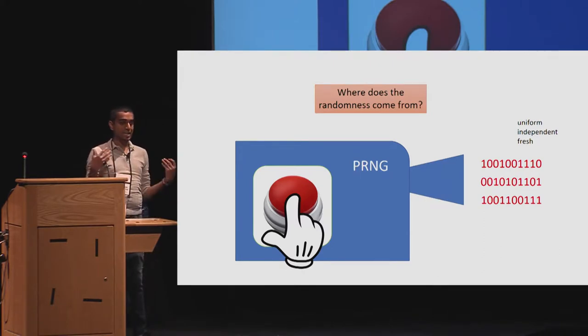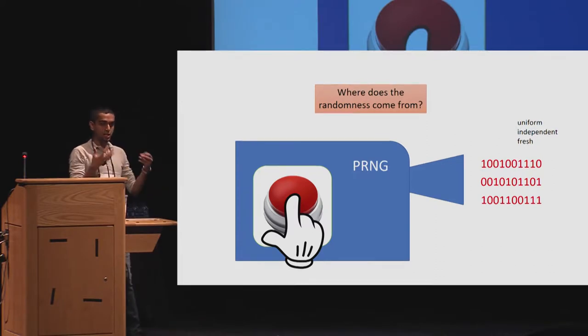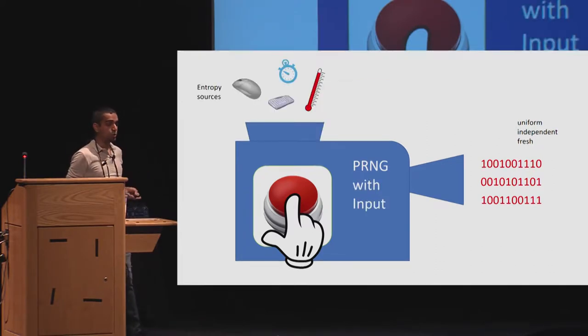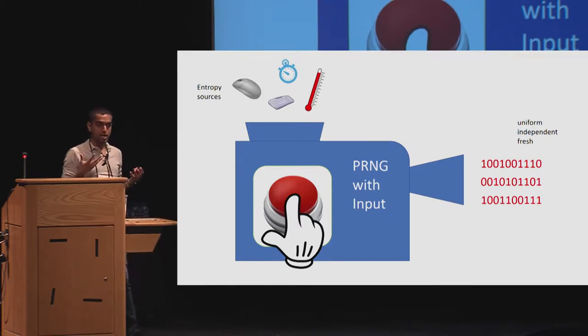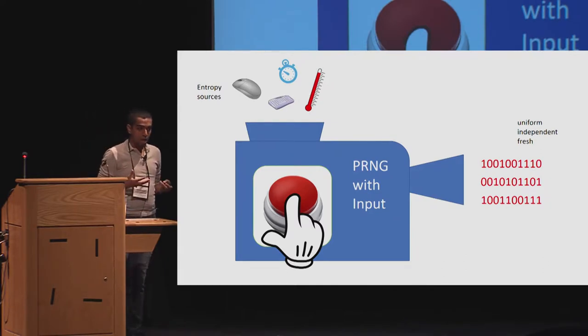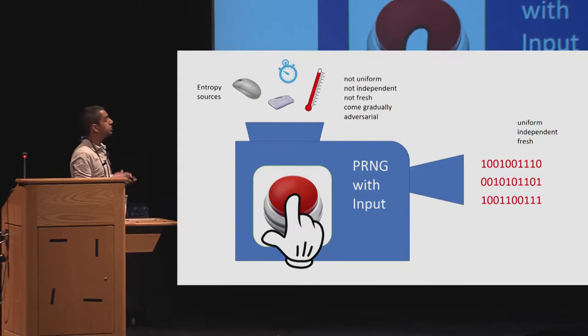When we look inside this big red button, what we see is that this PRNG is actually a PRNG with input. What are these inputs? These are entropy sources. Typically these are interrupts, but they can also be system measures such as temperature and timing. But what are the properties of these entropy sources? They are not uniform, they are not independent, they are not fresh. They come gradually, and they are adversarial.